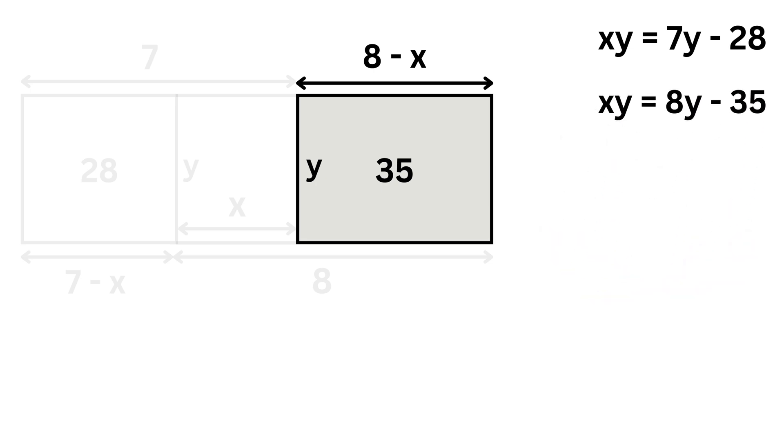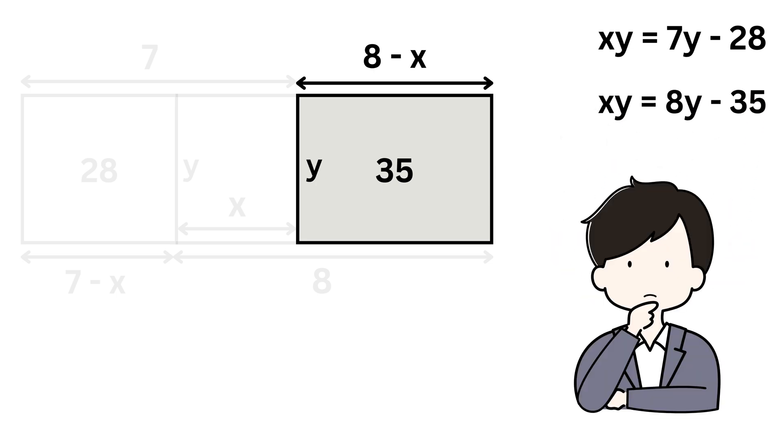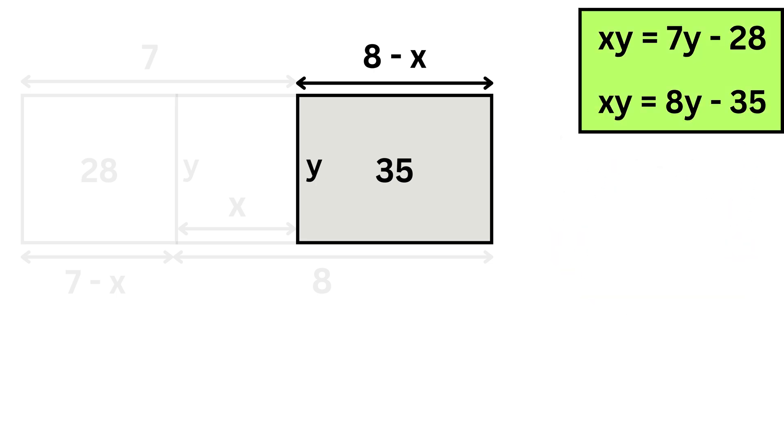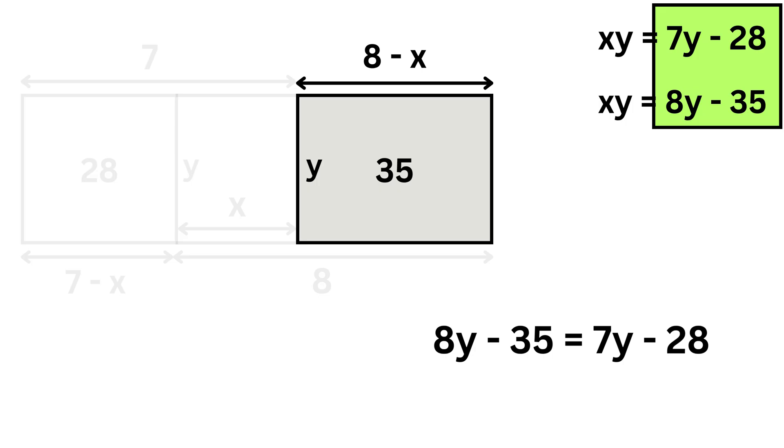Now, this is my favorite part. What do you think? Yes, right. Both of these equations have the same xy on the left-hand side, so we can equate the right-hand sides. That gives us 8y minus 35 equals 7y minus 28. Subtracting 7y from both sides, we get y equals minus 28 plus 35. So y equals 7. Wow!